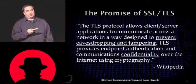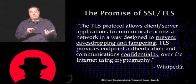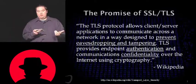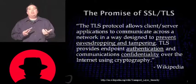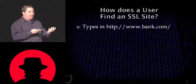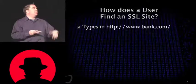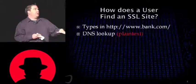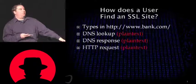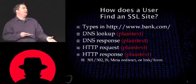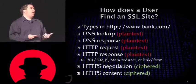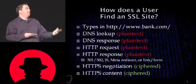Here's the promise of SSL and TLS — it's supposed to do good things. It's supposed to prevent eavesdropping and tampering, provide endpoint authentication, and communications confidentiality. Unfortunately, that's simply not the case. These problems begin even before the protocol is actually negotiated. The user types HTTP www.bank.com, and immediately we have a DNS lookup — in plain text — then a plain text response, a plain text HTTP request, and a plain text HTTP redirect response. Finally we get to the point where we negotiate. So there's a lot of space here for a man-in-the-middle to intercept and modify things before we ever get to the encrypted pages.